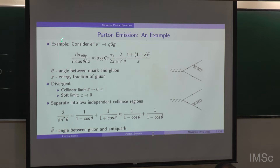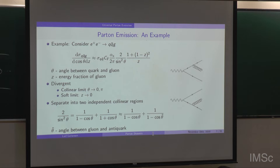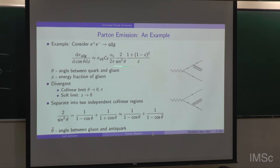Let me start with the parton shower. We want to start from a hard process and dress it up with additional radiation until we reach some cutoff scale. As an example, I'll start from e+e- going to qqbar+gluon. A hard process might be e+e- going to two jets, qqbar. The first additional radiation that might occur is an additional gluon. There's a nice property of this cross section: it factorizes. The differential cross section of qqbar going to gluon is proportional to the cross section of qqbar times some function describing the radiation pattern of the gluon.